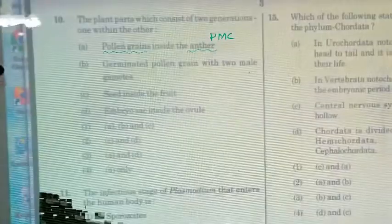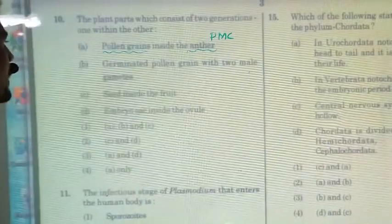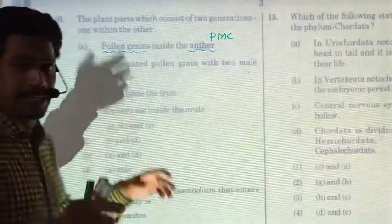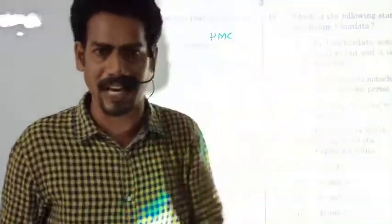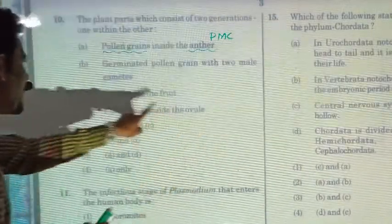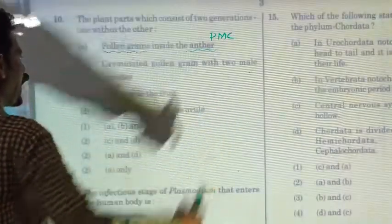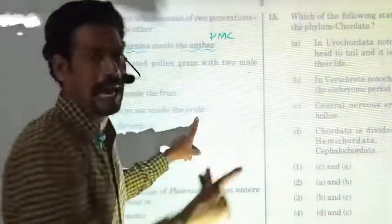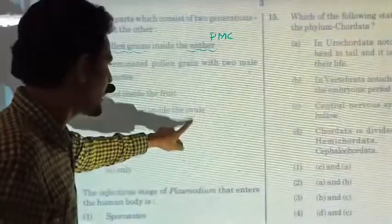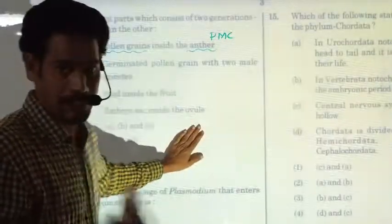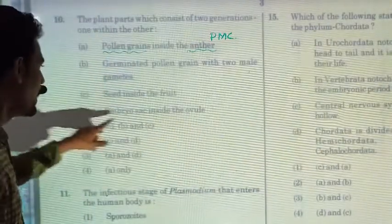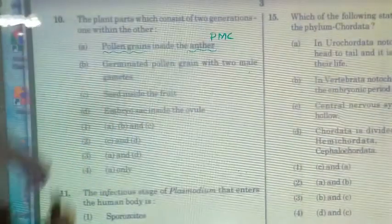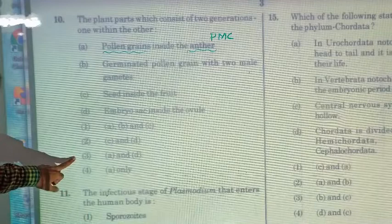The pollen grain represents only one generation — the gametophyte. The fruit within seed also shows two generations. The ovule is analogous to the anther — as the anther is to the microsporangium, the ovule is to the megasporangium. The ovule represents the sporophytic generation and will produce the female gametophyte. The answer for question ten is options A and D.